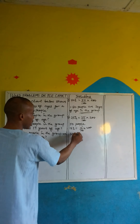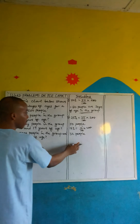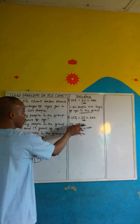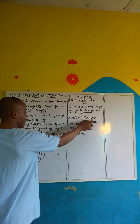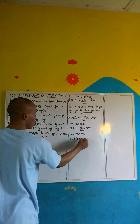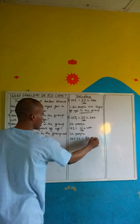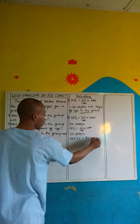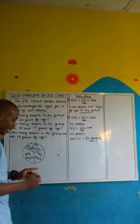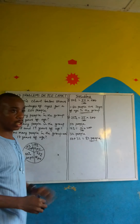We add them up. We have 32 people who are 19 years of age and 50 people who are 18 years of age. So 50 plus 32 gives us a sum of 82 people. So 82 people are 18 and 19 years of age in the group.